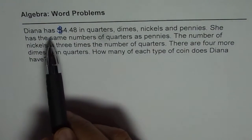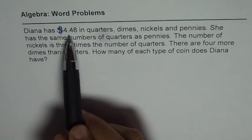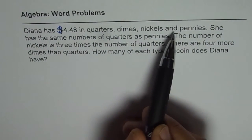Question is, Diana has $4.48 in quarters, dimes, nickels and pennies.